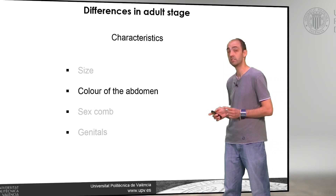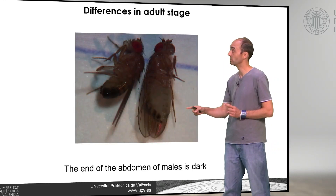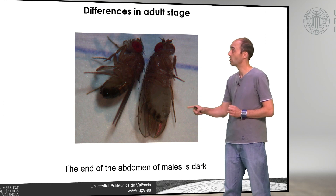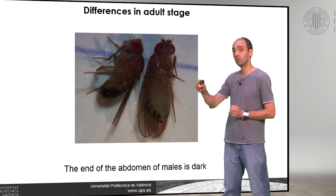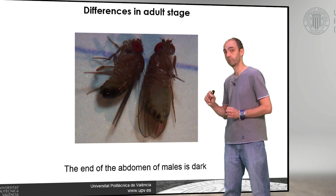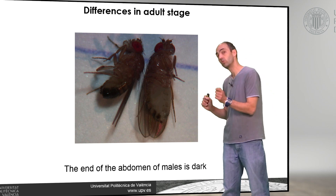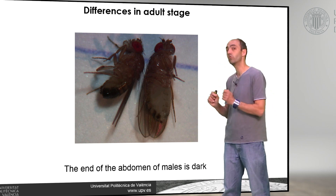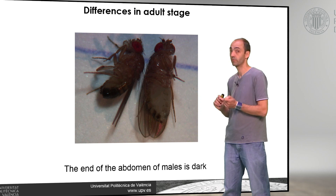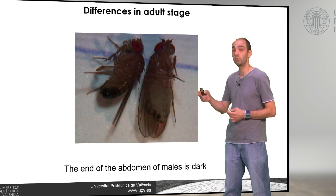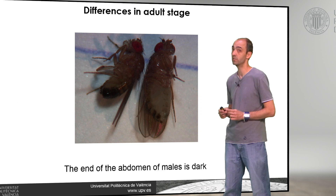The second difference is the color of the abdomen. If we look at the end of the abdomen, in a female it is completely striped, while in a male the end of the abdomen is black. We can use that difference in abdomen color to distinguish a male from a female. Sometimes it is impossible because there are mutants that are completely black, so in that case we cannot use this difference.